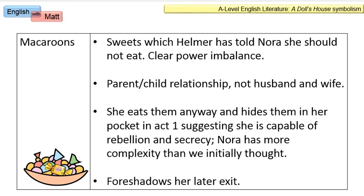She then invites Mrs. Linden and Dr. Rank to have a macaroon as well, as if she wants to share in that sense of rebellion. The fact that she's hiding those macaroons in her pockets, eating them, and carefully wiping her mouth suggests she is capable of rebellion and secrecy. Unlike the childlike persona she puts on when speaking to Helmer, she is actually capable of more complexity than we initially thought. This ability to rebel and keep secrets foreshadows her later exit at the end of the play.